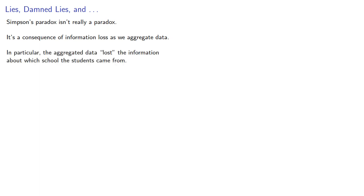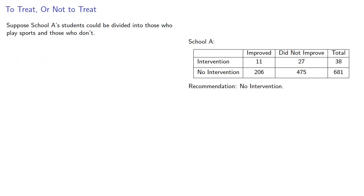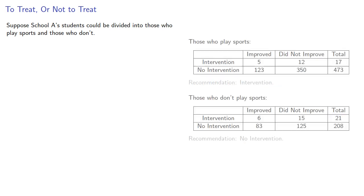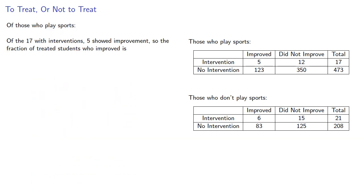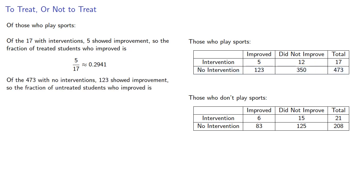In particular, the aggregated data lost the information about which school the students came from, which means more detailed information is useful. For example, suppose school A's students could be divided into those who play sports and those who don't. Of those who play sports, of the 17 with interventions, 5 showed improvements — about 29%. Of the 473 with no interventions, 123 showed improvement — about 26%. So those with interventions did better, and we'd recommend interventions.